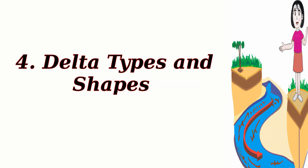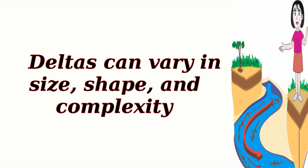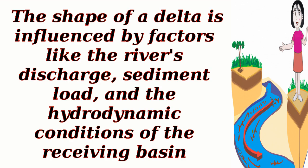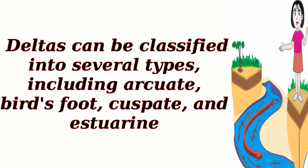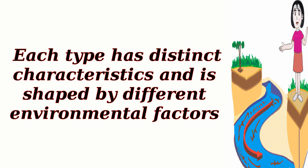4. Delta types and shapes. Deltas can vary in size, shape, and complexity. The shape of a delta is influenced by factors like the river's discharge, sediment load, and the hydrodynamic conditions of the receiving basin. Deltas can be classified into several types, including arcuate, birdsfoot, cuspate, and estuarine. Each type has distinct characteristics and is shaped by different environmental factors.